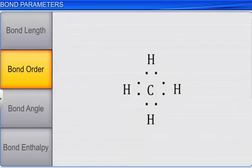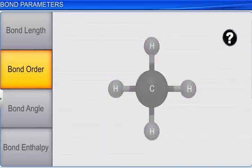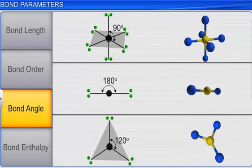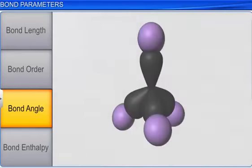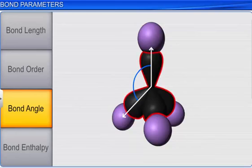From the Lewis-dot structure, we get the sequence of atoms in a molecule. But what about its structure? For this, we need to look at the next bond parameter: bond angle. It helps us create a three-dimensional structure of the molecule around the central atom. In a molecule, the angle between the orbitals present around the central atom is called the bond angle.